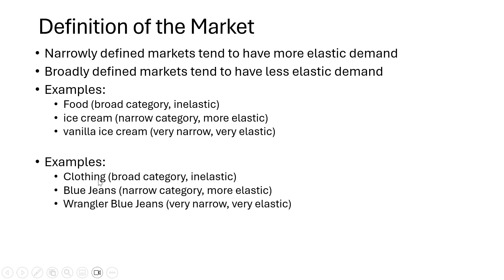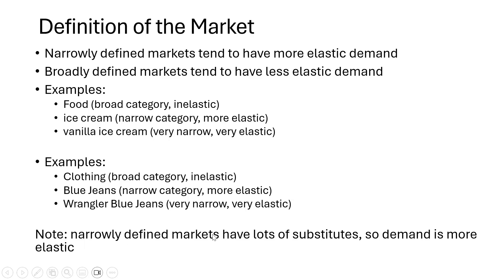Some further examples: clothing is a broad category with more inelastic demand. Blue jeans is a narrower category with more elastic demand. And a specific brand, like Wrangler blue jeans, is a very narrowly defined market with very elastic demand. Narrowly defined markets have lots of substitutes, so demand is more elastic.